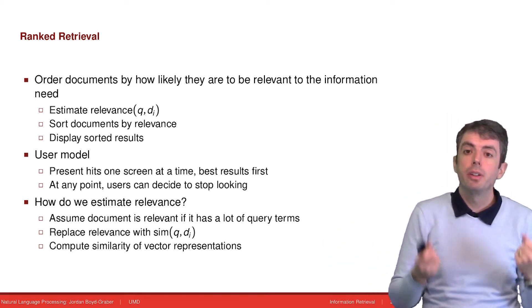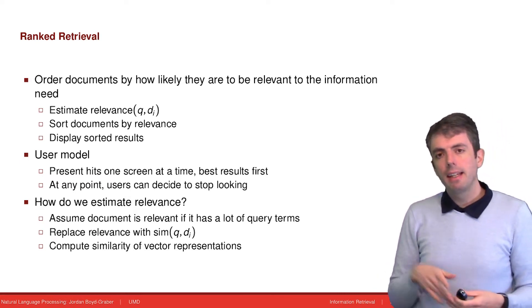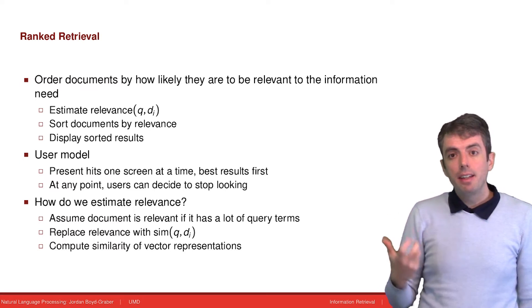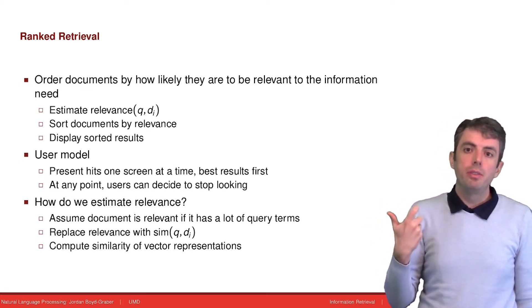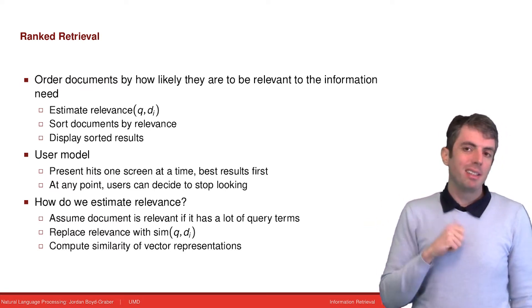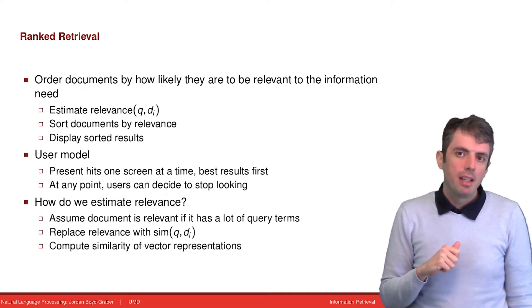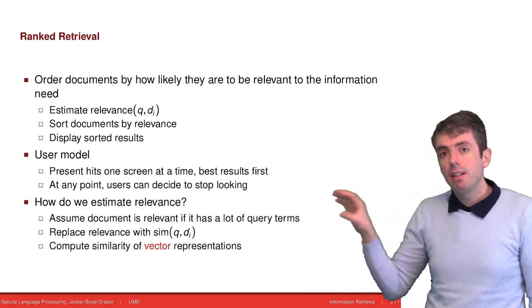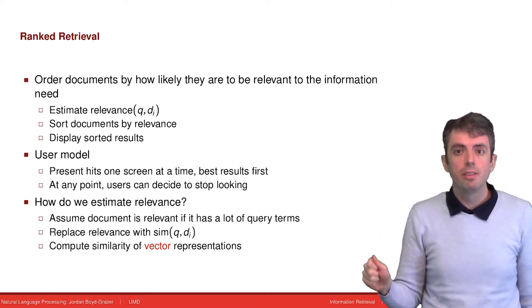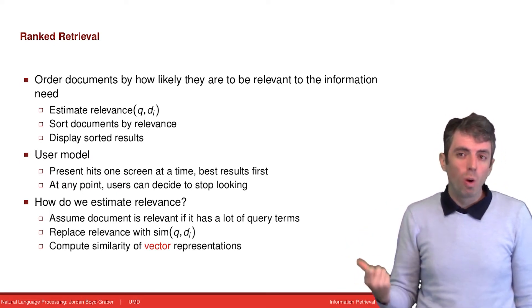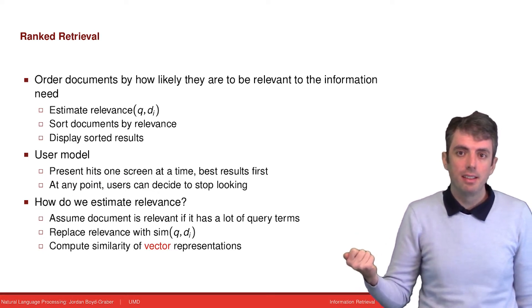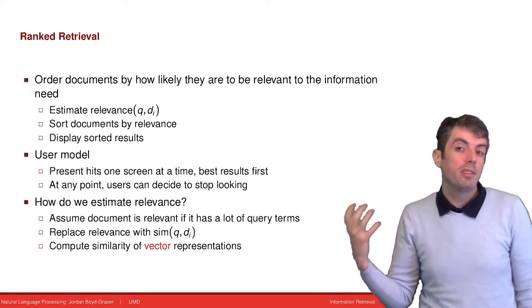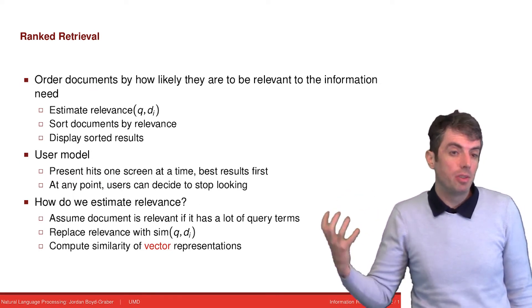Mathematically, the way that we're going to do this is we're going to create vectors that encode both the query and the document, and then we can just take the similarity of these two vectors as a proxy for the relevance. So let's focus a little bit more on this because this is going to be a very common theme for the rest of this course using vector representations of words, documents, and sentences.